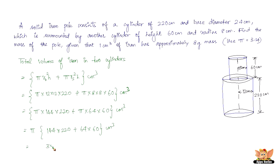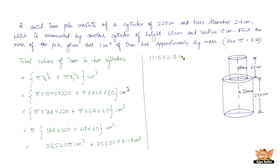Solving this, we get 35,520π cm³, which is 35,520 × 3.14 cm³, giving us 111,532.8 cm³. Therefore, this is the total volume of the iron.